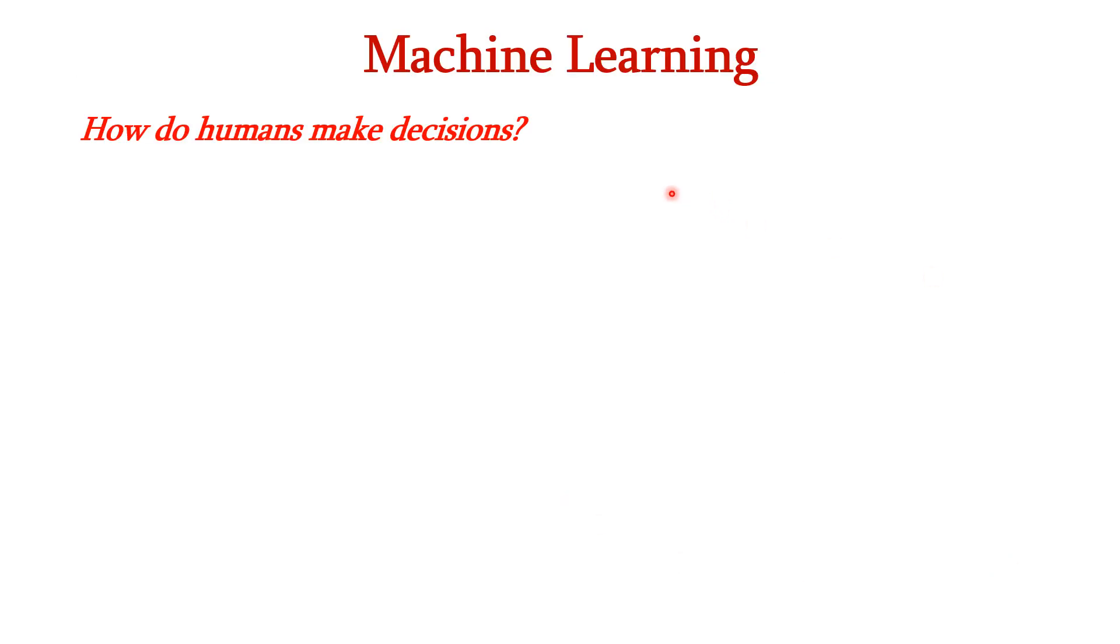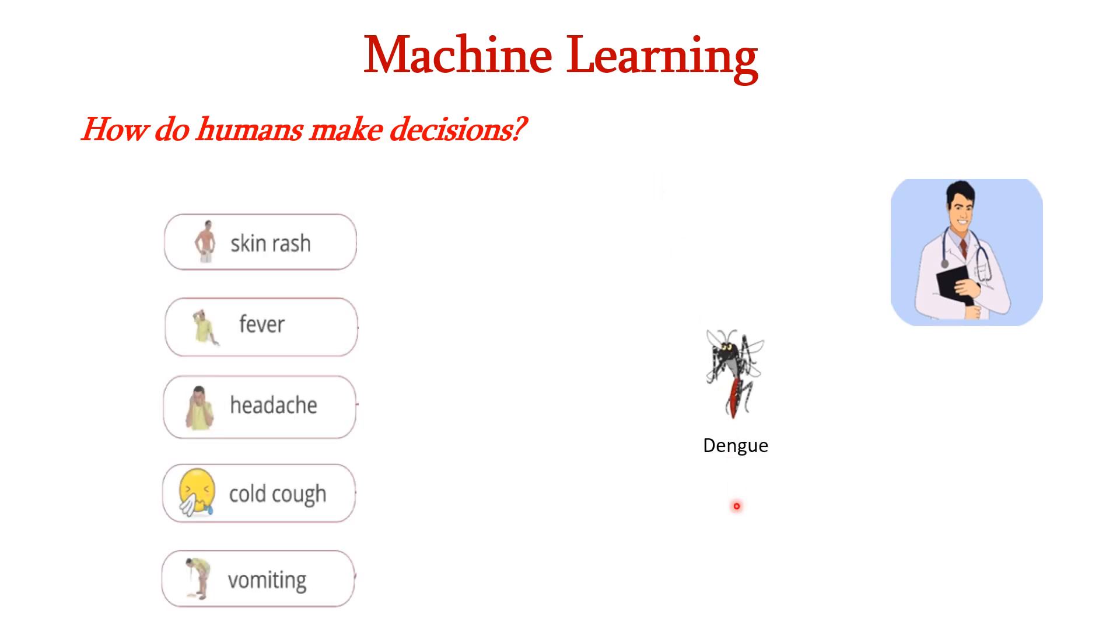Before understanding what is machine learning, let us see how human beings make their decisions. For example, consider a doctor who diagnoses whether a patient is having Dengue fever or not based on some symptoms like skin rash, fever, headache, cold cough, vomiting, etc.